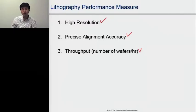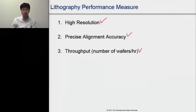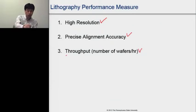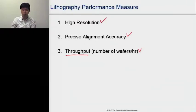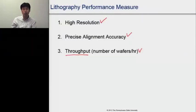Precise alignment is needed when you keep stacking designs on top of previous designs. For advanced lithography technologies, the alignment margin — the mismatch between one design layer and another — is smaller than 20 nanometers. As for throughput, the microelectronics industry currently uses 12-inch silicon wafers, and people want a throughput of at least more than 100 wafers per hour to be processed.